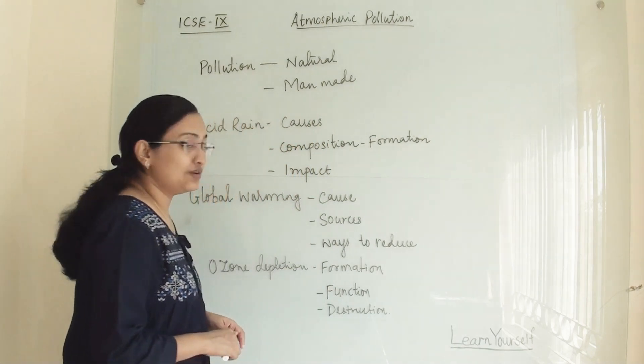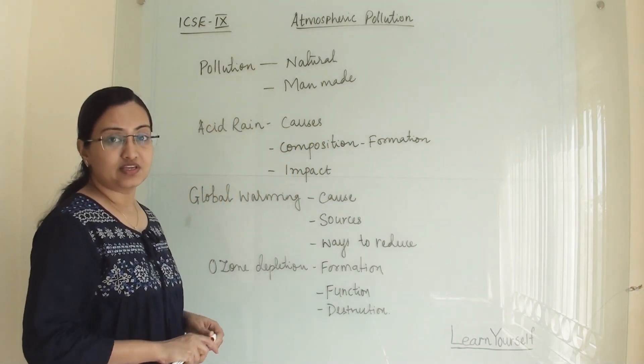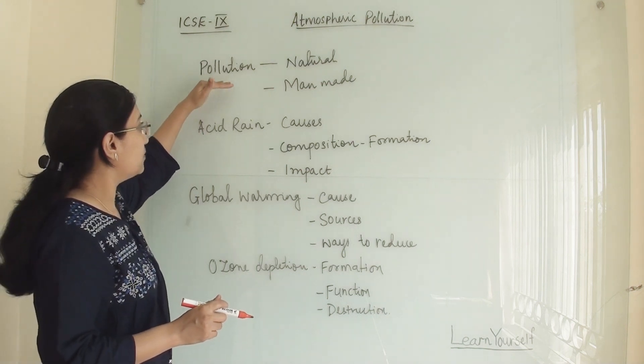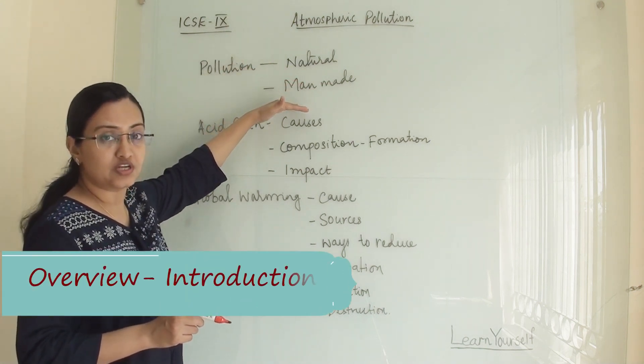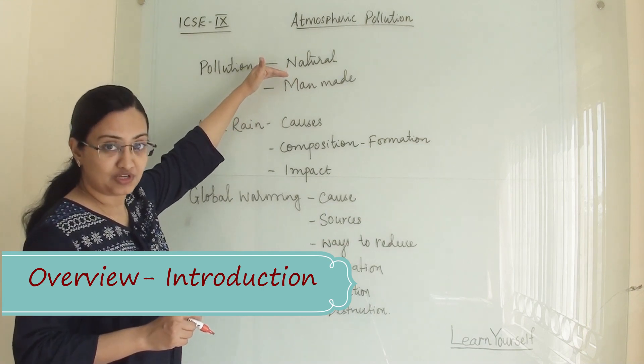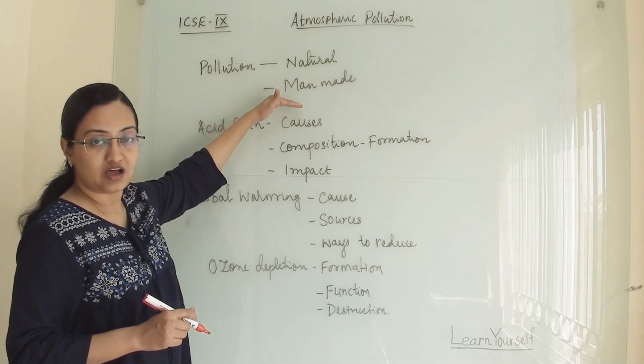So let us take an overview of the chapter and what all things we are going to study. Basically we will cover what all types of pollution are there on the earth. Some sources are from nature and some sources are manmade.